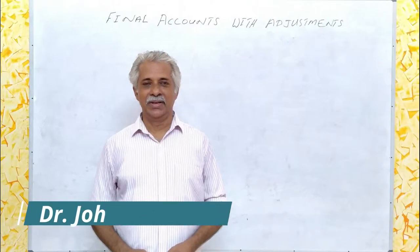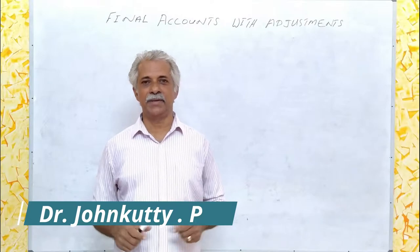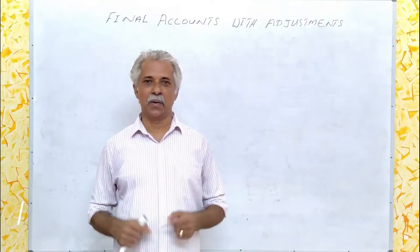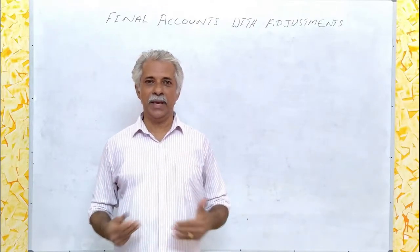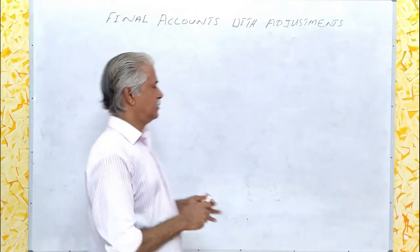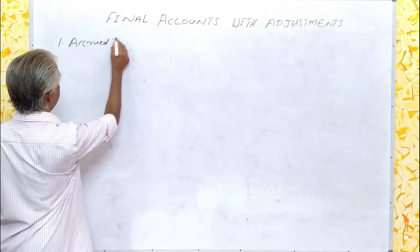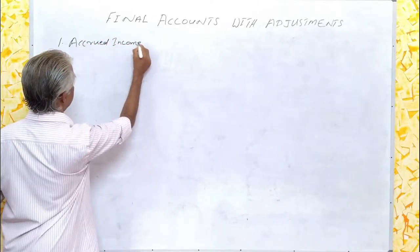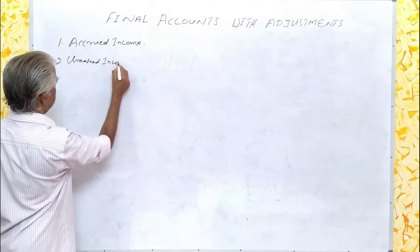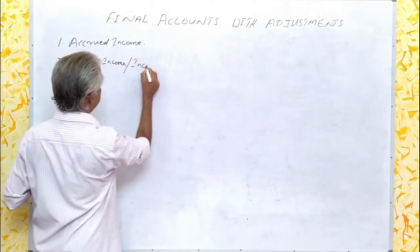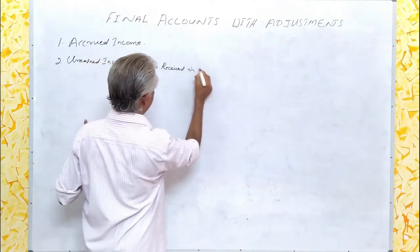Hi friends. So far we have seen the treatment of outstanding expenses, prepaid expenses, closing stock and depreciation in the final accounts. Today I shall explain two other items: number one, accrued income, and number two, unearned income or income received in advance.